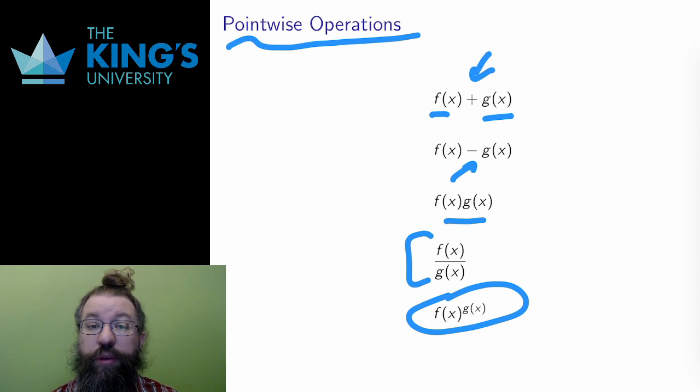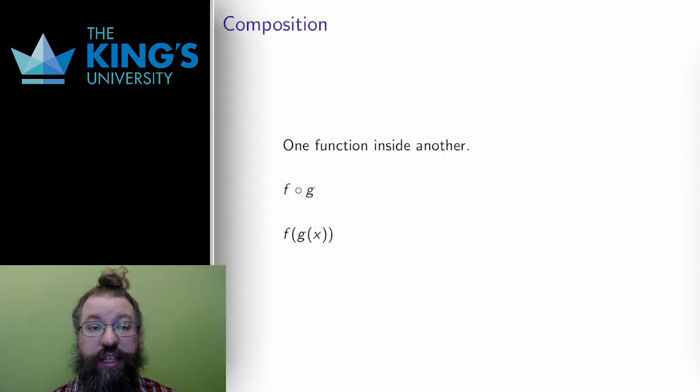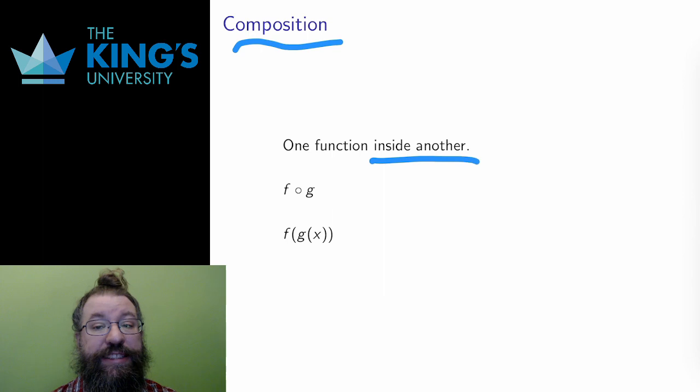However, there is another important way to combine functions together. If I think of a function as a machine, pointwise operations mean that I take the same input and run it through both machines separately before I do something to these outputs. However, instead of doing both machines separately, I can do them in sequence. I can use one machine, then take the output of that machine and use it as the input for the next machine. This is called composition, doing one function after another, one function inside another.